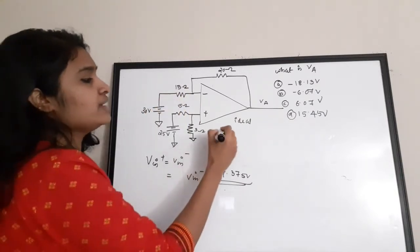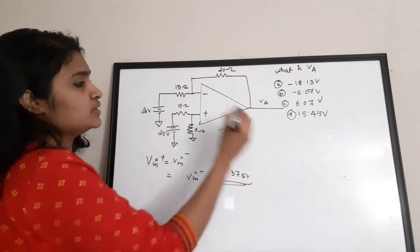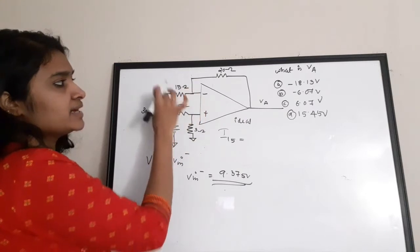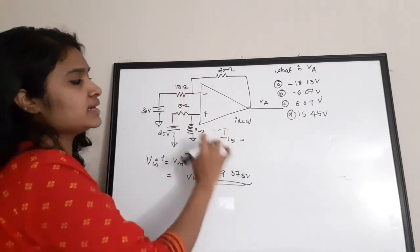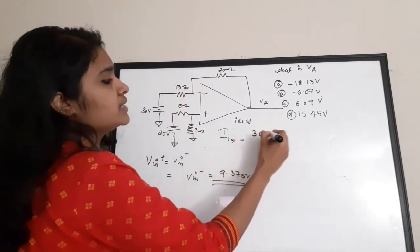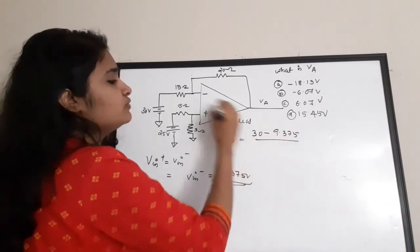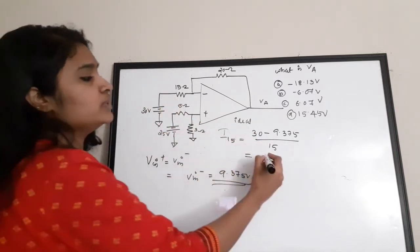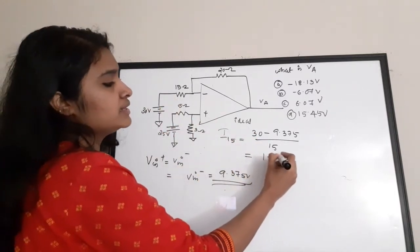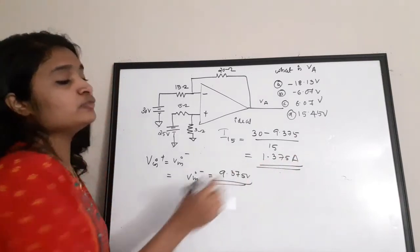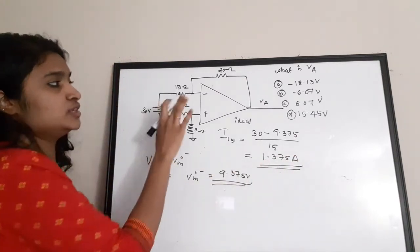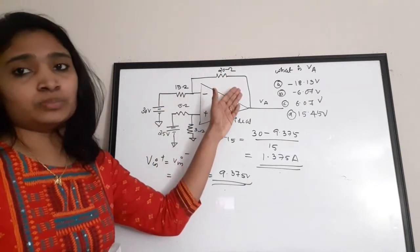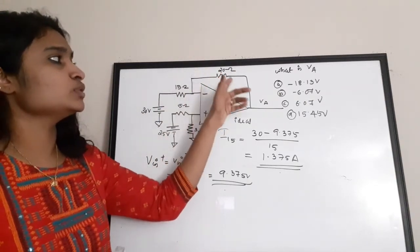The current through the 15Ω resistor: I15 = (30 − 9.375) / 15 = 20.625 / 15 = 1.375 A. Next we need the current through the 20Ω feedback resistor. Since the op-amp is ideal, no current is drawn into the input terminals.